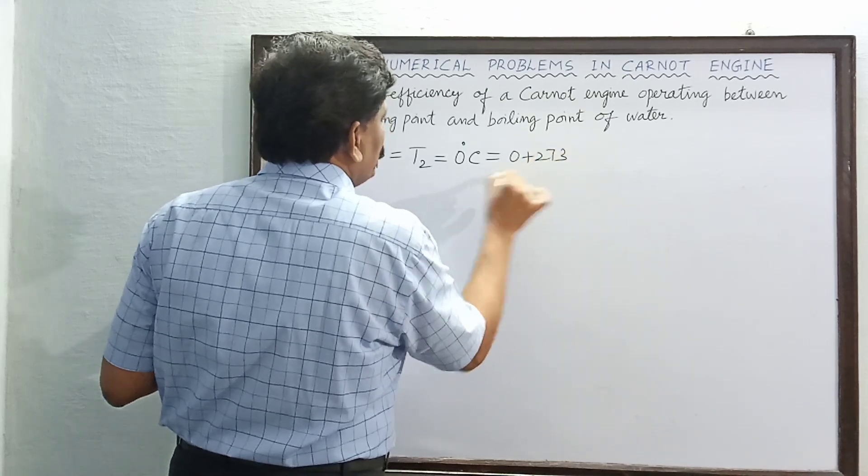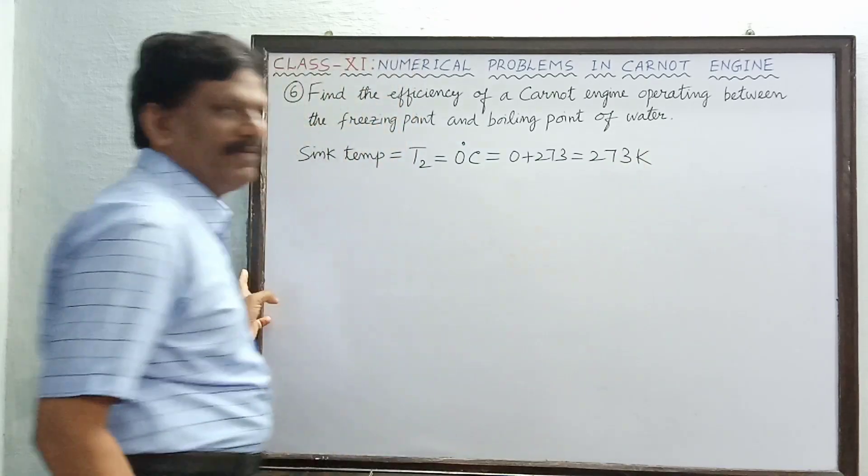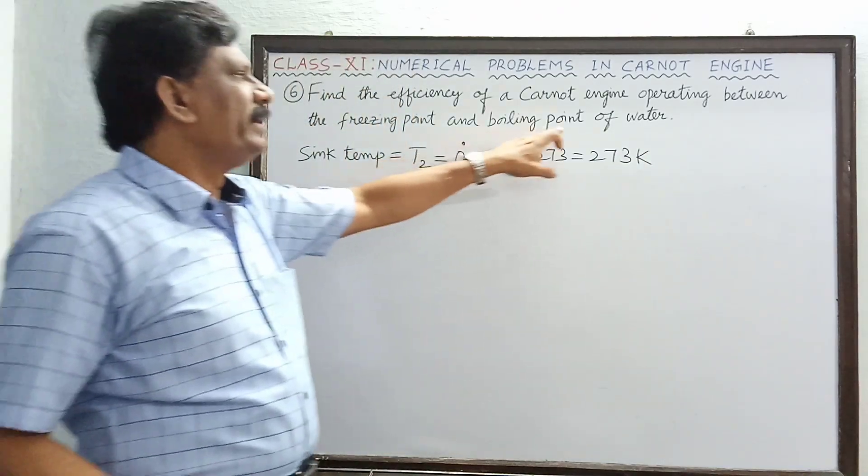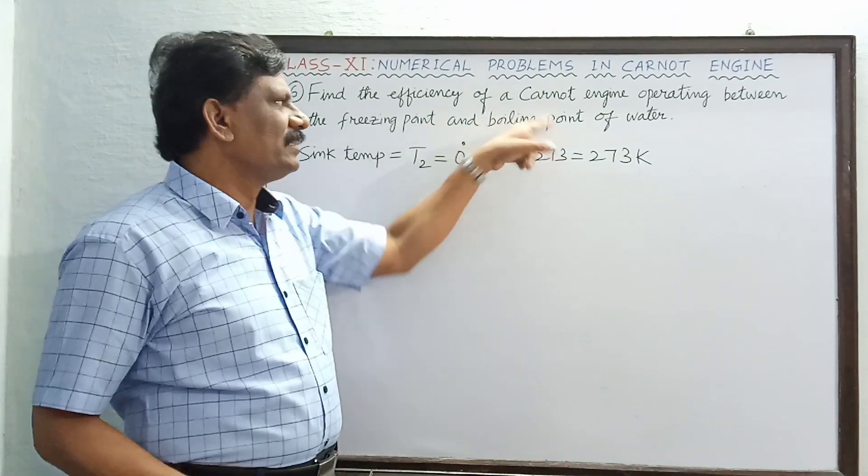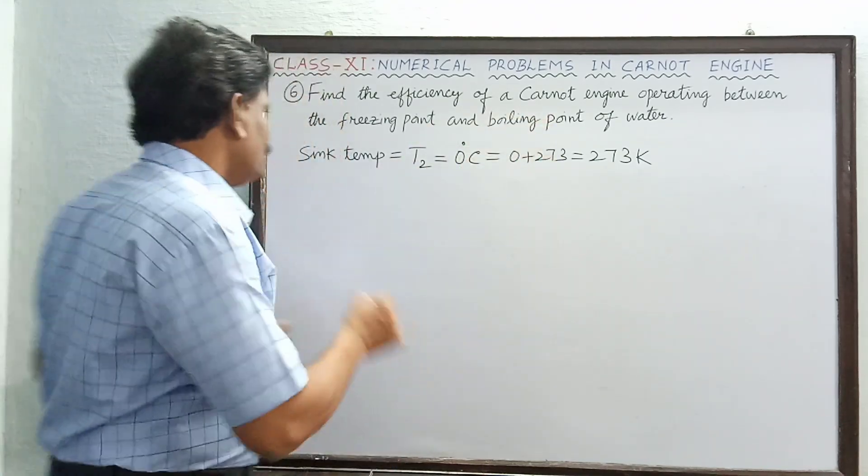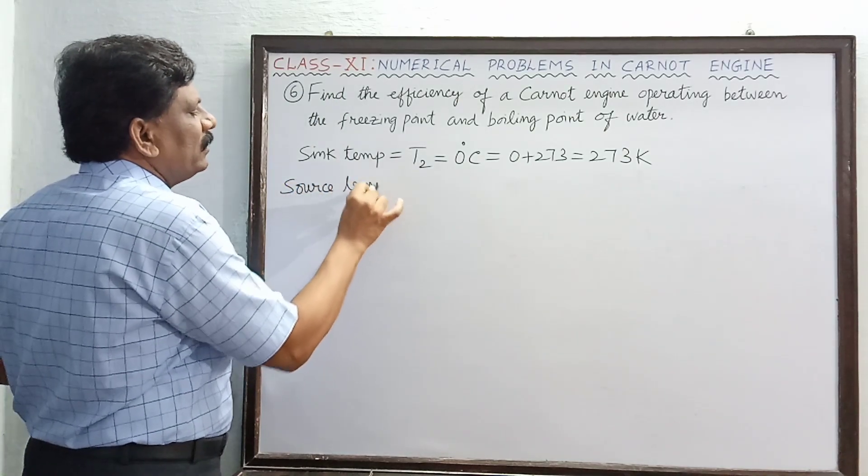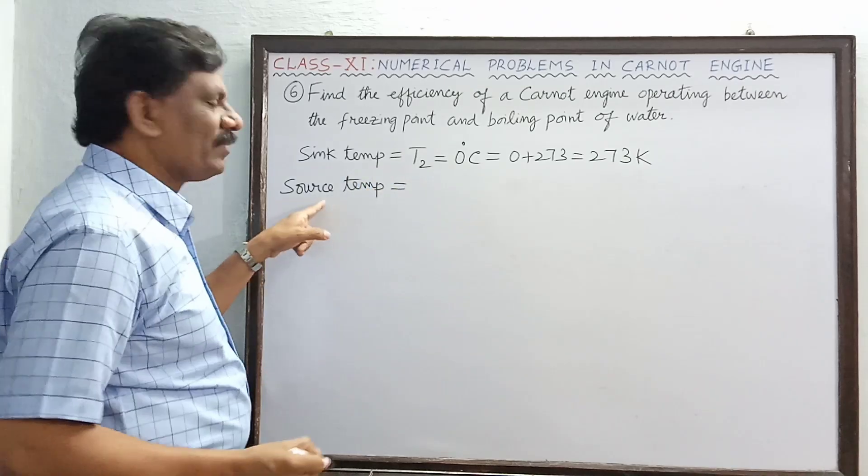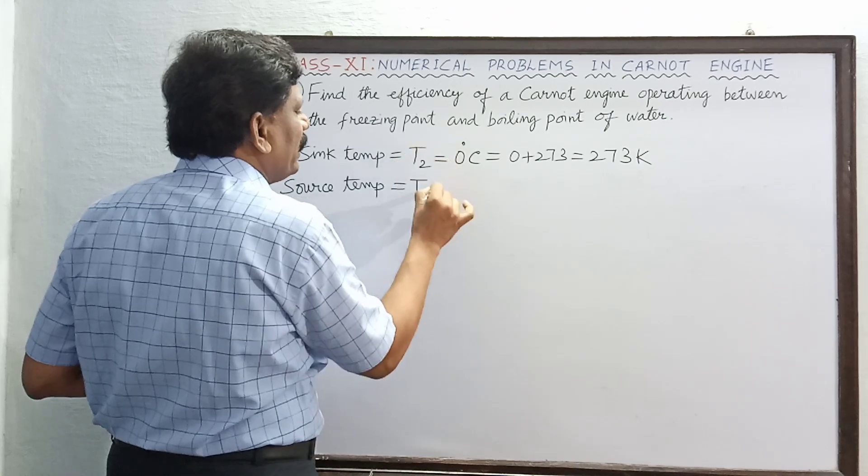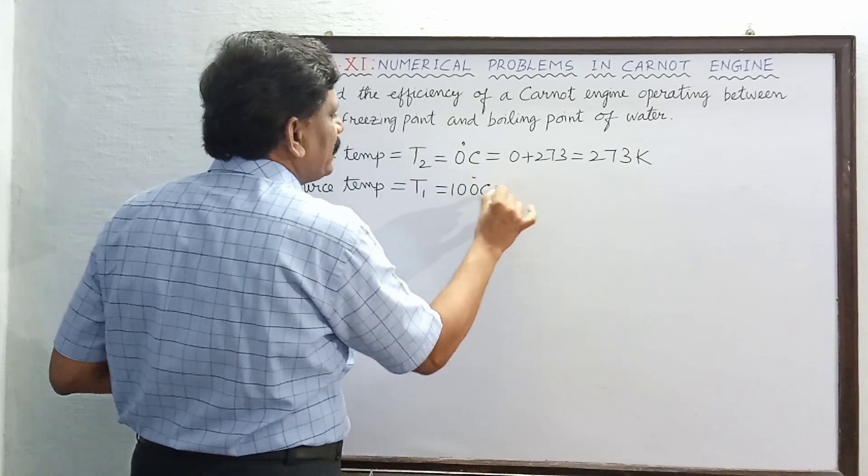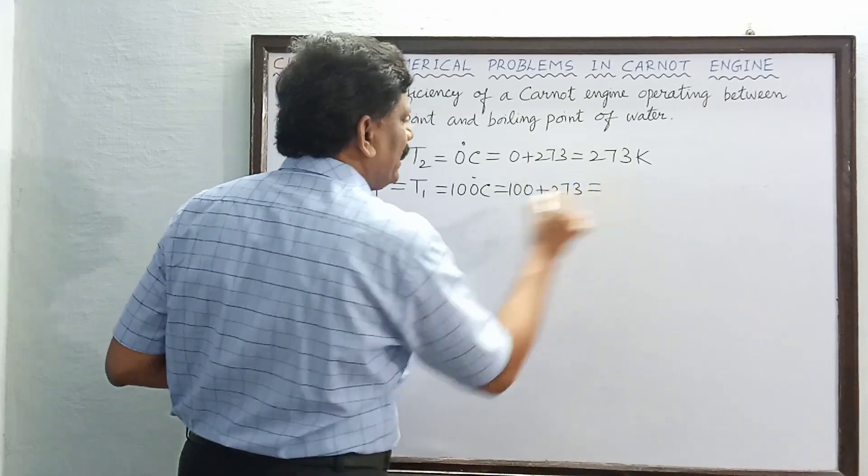And the boiling point of water is 100 degrees Celsius. Comparing to the freezing temperature, the boiling point is greater, so this is the source temperature. High temperature reservoir is called the source and its temperature is denoted by T1. So this is 100 degrees Celsius. In Kelvin we have to add 273 with the 100, so this will become 373 Kelvin.